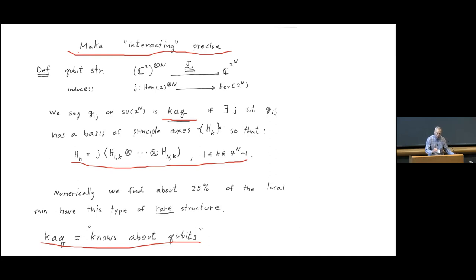And choosing that isomorphism capital J is equivalent actually to choosing an isomorphism on the Hermitian operators. One implies the other. And we say that a metric g_ij on the Lie algebra is CAC. I wrote that down at the bottom. CAC stands for knows about qubits. If the metric has a basis of principal directions, principal with respect to the Killing form, so that all the principal directions, which are written H sub K on the slide, are actually tensor factors. So, under the little isomorphism J, the direction in the Lie algebra, which is principal, turns out not just to be a random direction, but a rank-one tensor. It's directly the tensor with no sums of a Hermitian operator in each of the factors. So, it's totally split.